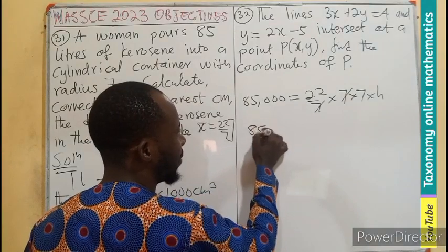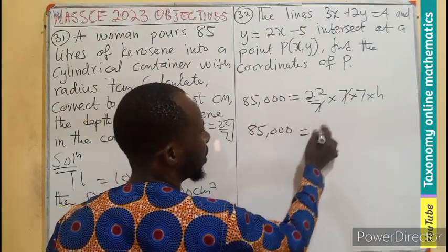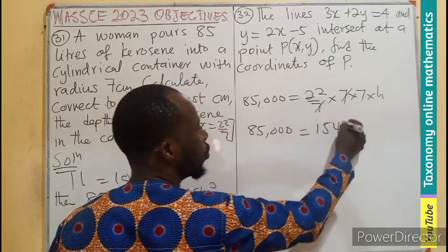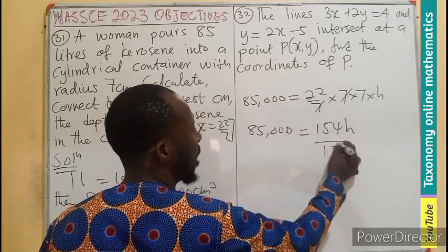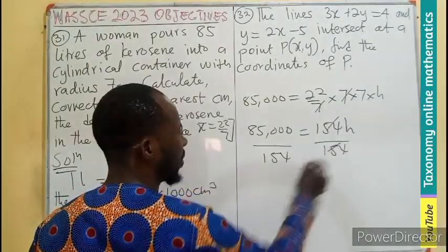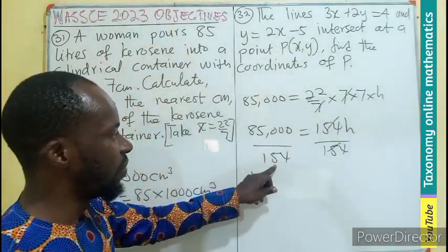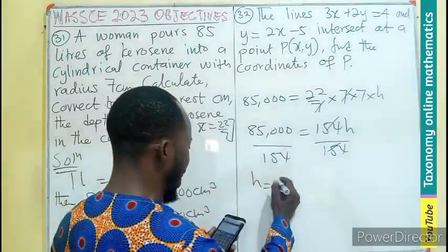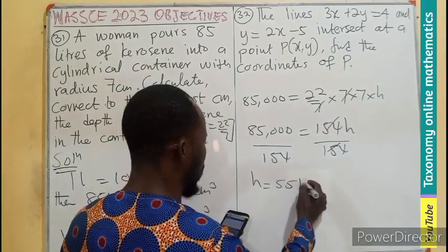I believe 85,000 equals to 154 times h, where 7 times 22 is 154. So 154h. This will cancel. It means the h is going to be, if we divide 85,000 by this, that will give us 551.98948.